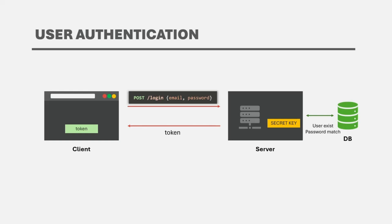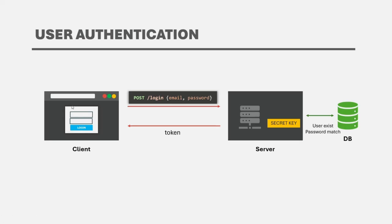After one hour, the access token will expire and the user will have to re-authenticate to further use the application. That means after one hour, the user will have to login again using the login UI, where they will provide their email, username, and password and make a login request again — every hour, once the last JSON web token issued for the user has expired.